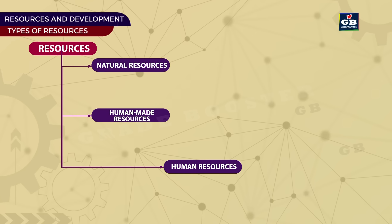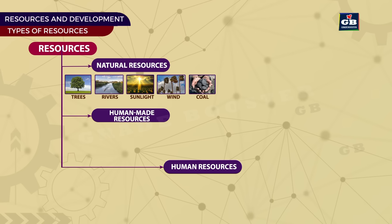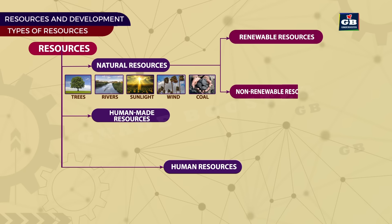Natural Resources. The resources that are found in nature are called natural resources. For example, trees, rivers, sunlight, wind, and coal. These natural resources are further divided into renewable resources and non-renewable resources.